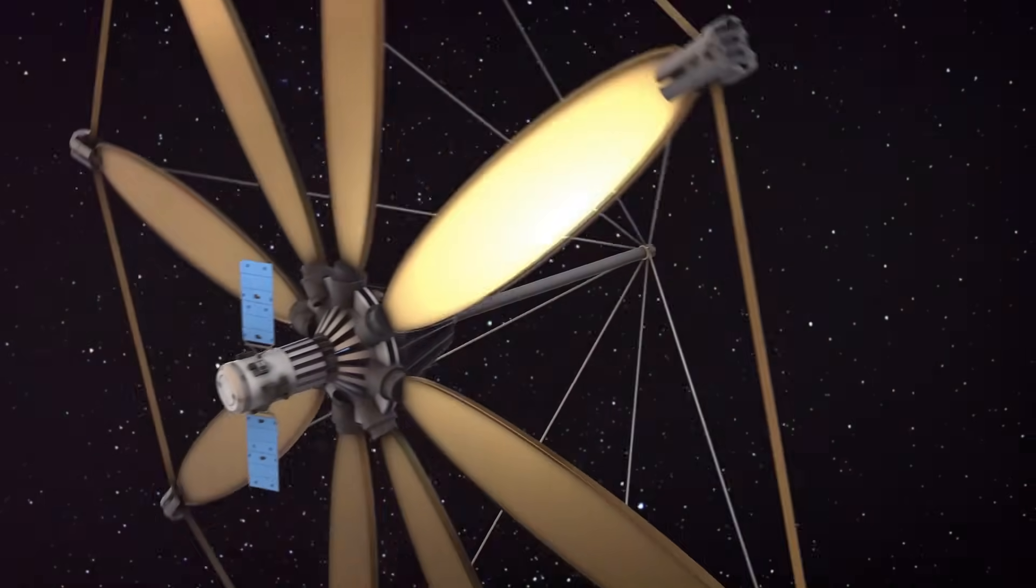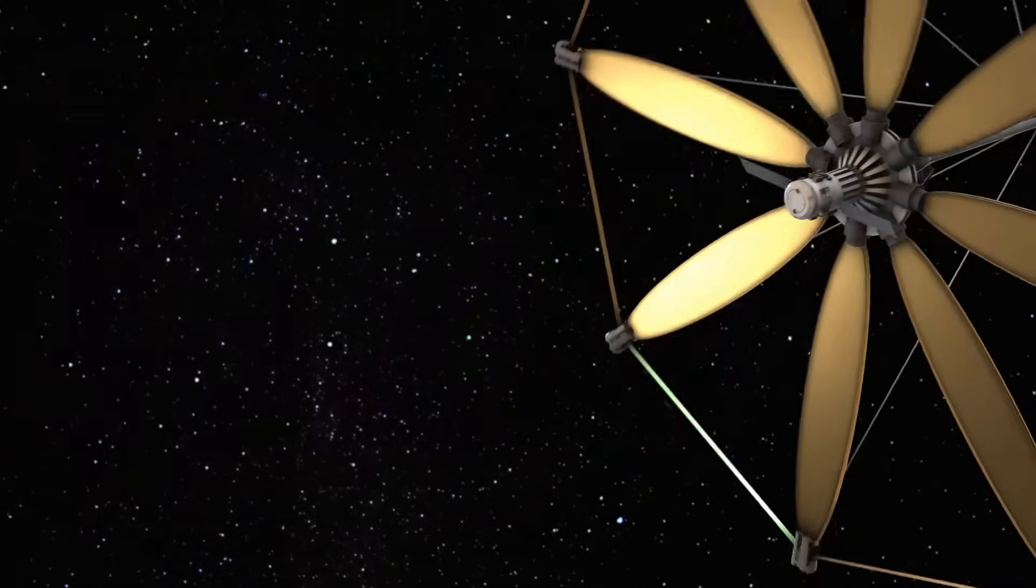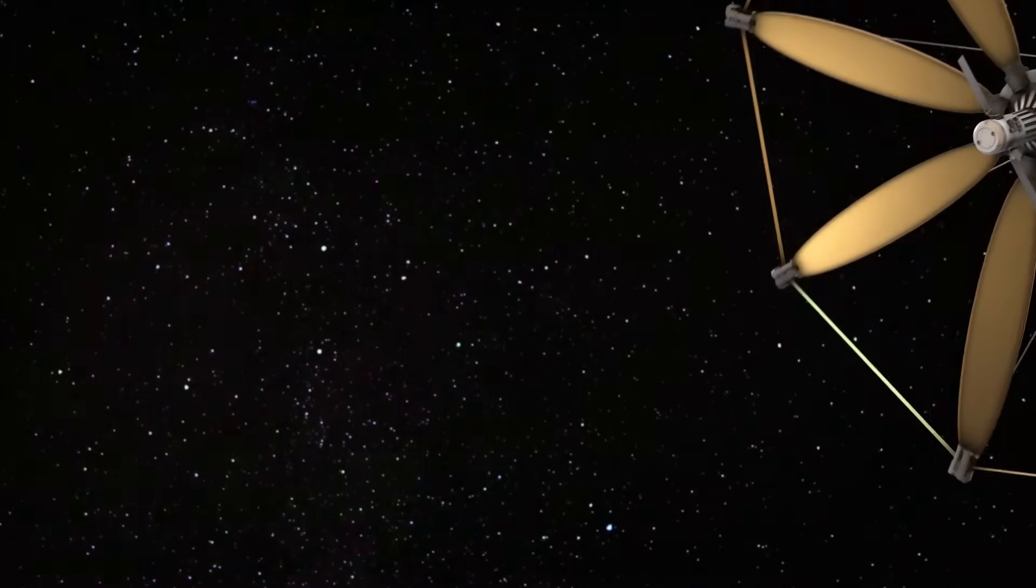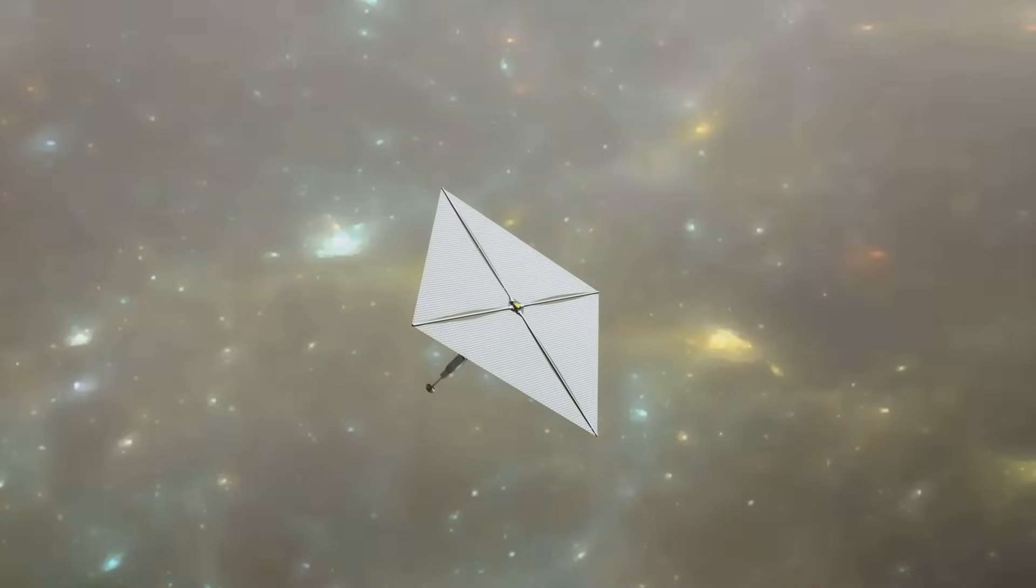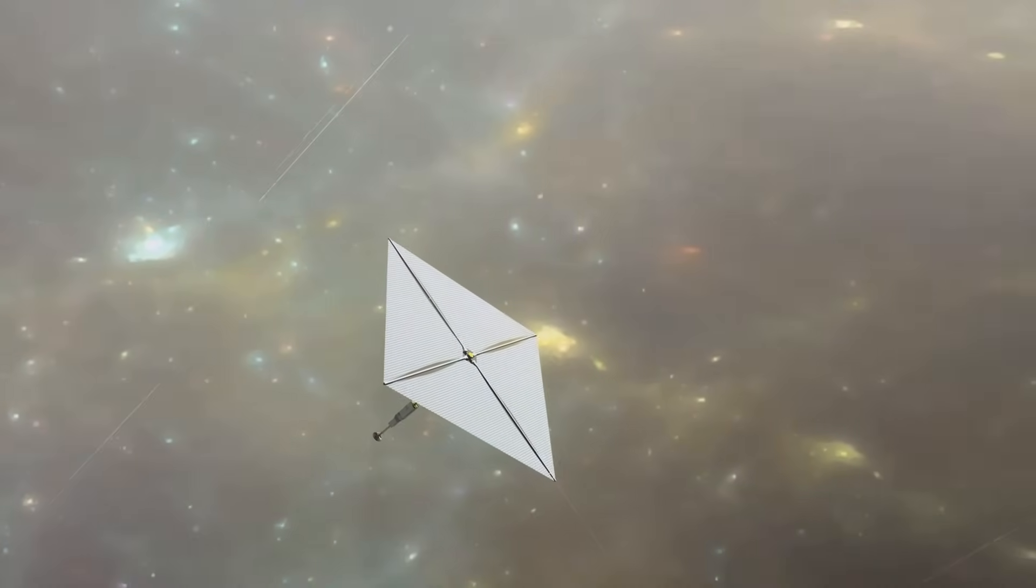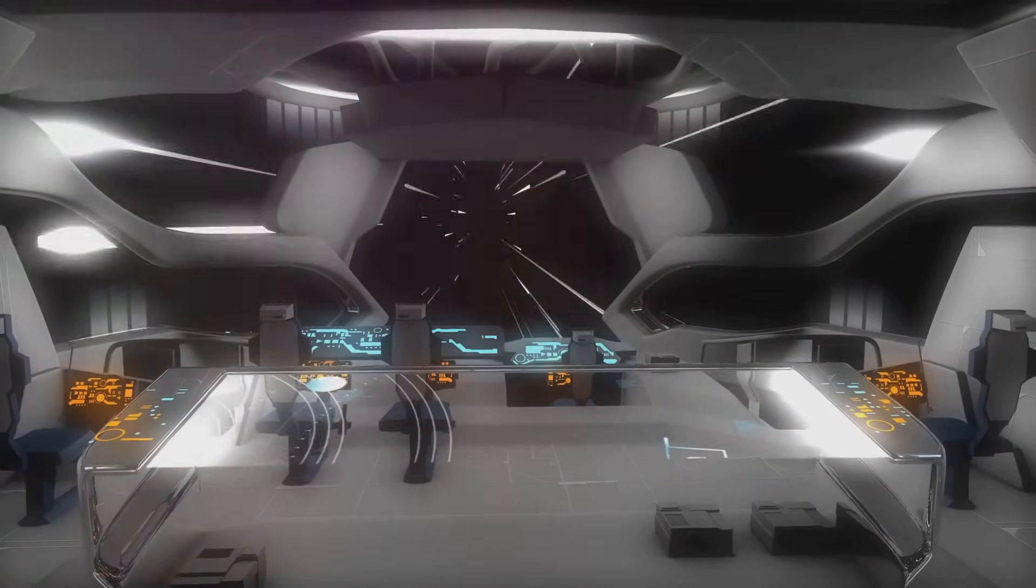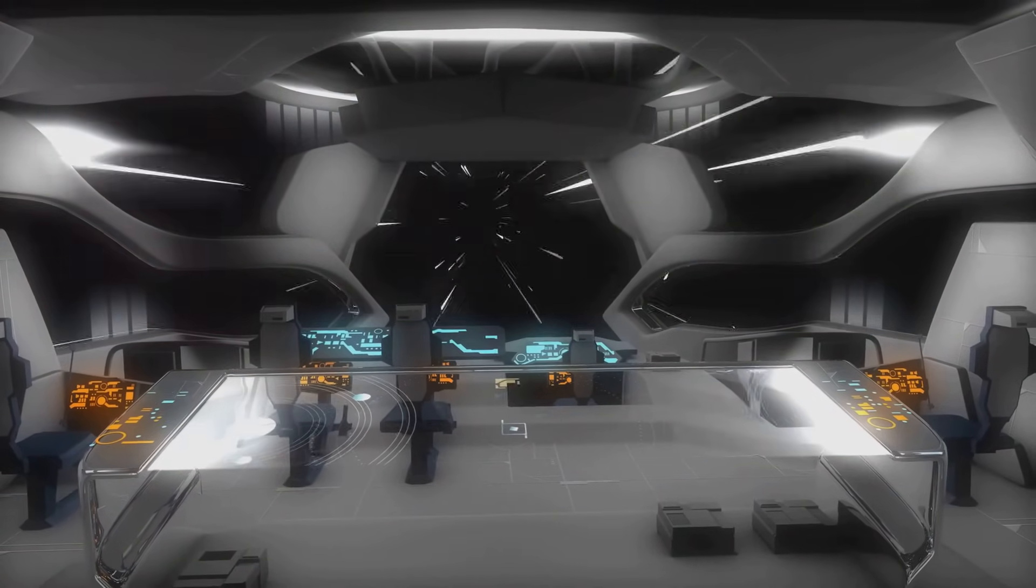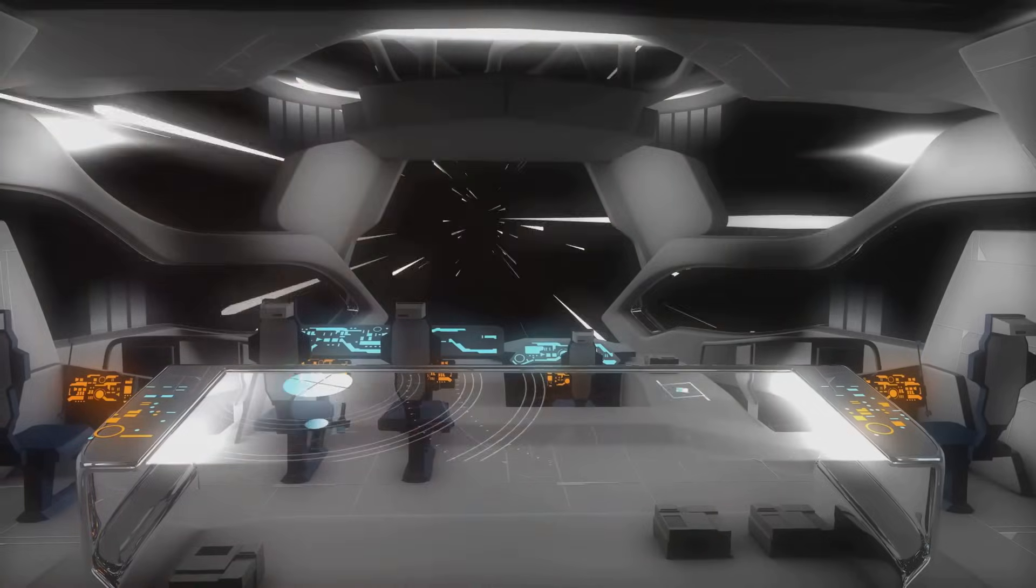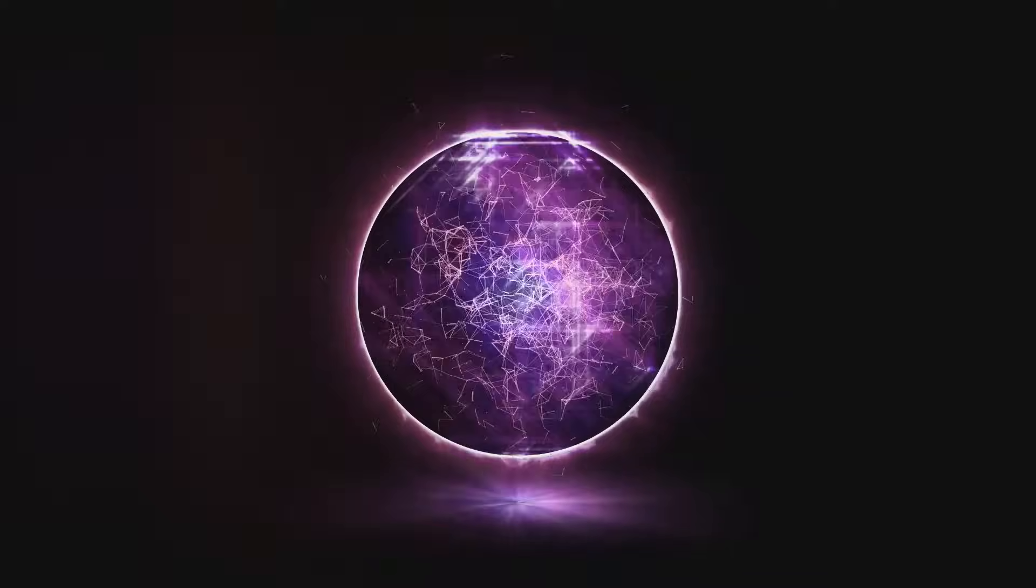First on our list is the concept of light sails. Imagine a spacecraft, not propelled by fuel, but by the sheer pressure of light. These light sails, much like the sails of a ship, could harness the momentum of photons, particles of light, to propel a spacecraft. By focusing a powerful laser beam on the sail, we could potentially achieve speeds that are a significant fraction of the speed of light. A journey to even the nearest star could be cut down to just a few decades.